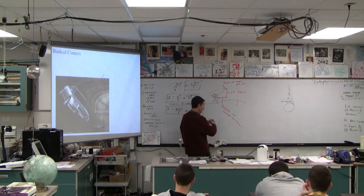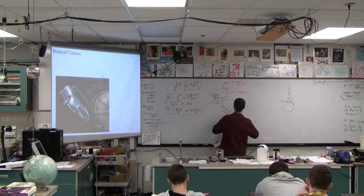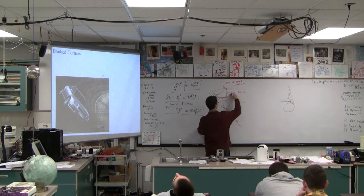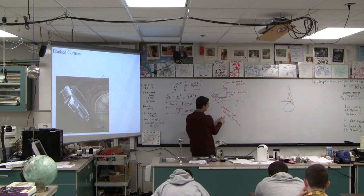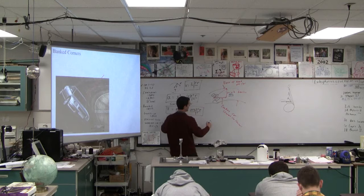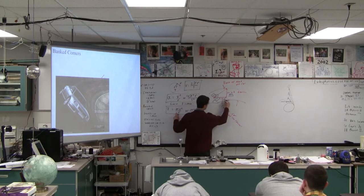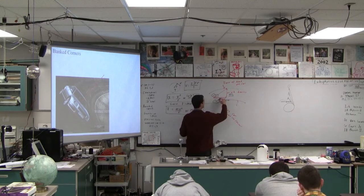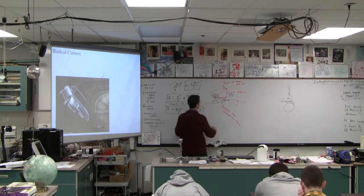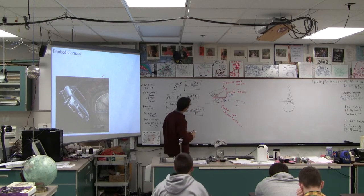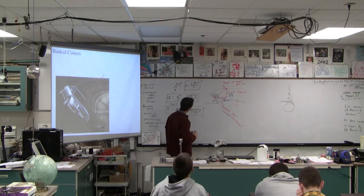So let's make the ideal banked corner. For an ideal banked corner, this is going to counteract gravity. So that's mg. And this is going to push the car toward the center. So it's going to be mv squared over r. This angle here, is that the same as this angle? Are they congruent?